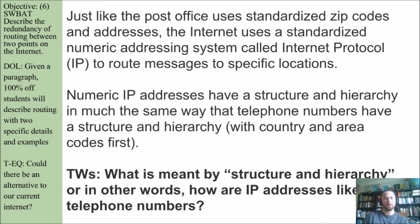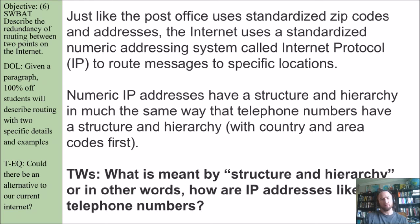Just like the post office uses a standardized zip code and addresses, the internet uses a standardized numeric addressing system called Internet Protocol to route messages to specific locations. The numeric IP addresses have a structure and hierarchy in much the same way that telephone numbers have a structure and hierarchy, with country code first and area codes after that. So keep in mind that routers are using this IP information.